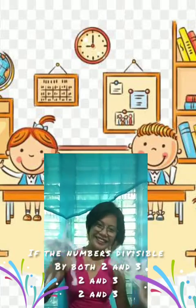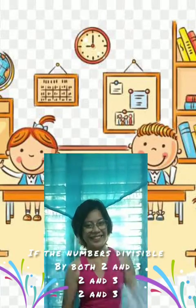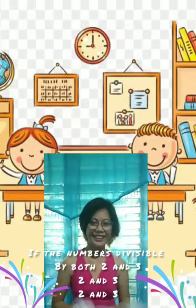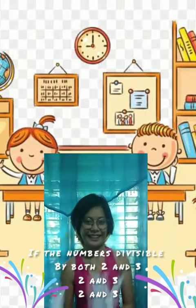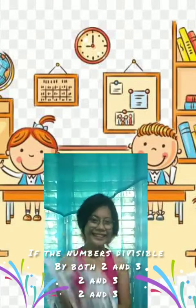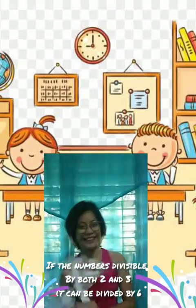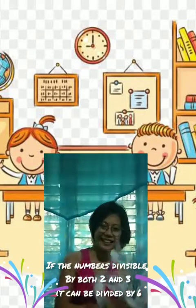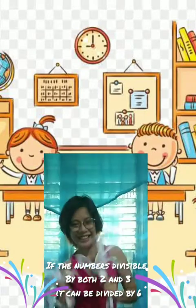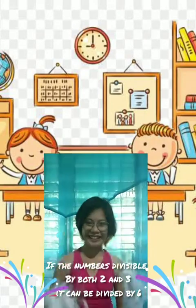If the number is divisible by both 2 and 3 — 2 and 3 — if the number is divisible by both 2 and 3, it can be divided by 6.